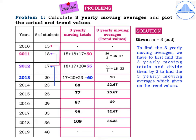Problems on moving averages are important and can be asked as a five-marker. Problem 1: Calculate three-yearly moving averages and plot the actual and trend values. The years run from 2010 to 2019, and the number of students for each year are: 15, 18, 17, 20, 23, 25, 29, 33, 36, and 40.